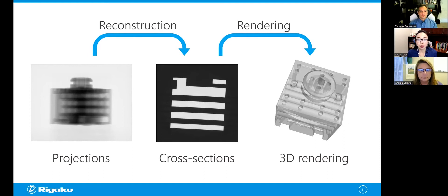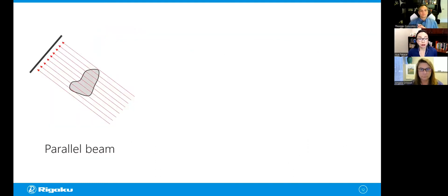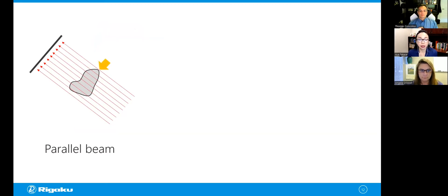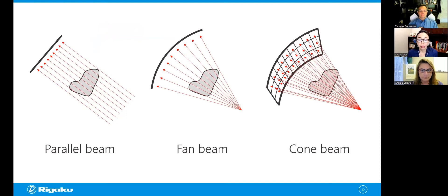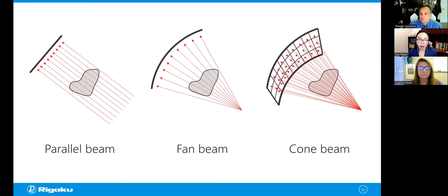Once you have a set of cross-sections or 3D volume data, you can display it in a 3D rendered view, but this is just a visual representation. Rendering itself is not reconstruction. Reconstruction is a process of going from the projections to the cross-sections — from 2D to 3D. When you do the reconstruction calculation, it's important to understand what X-ray geometry you use for data collection. You might use parallel beam geometry, fan beam geometry, or cone beam geometry. As you go from parallel to cone beam, the calculation gets more complicated. We're going to focus on parallel beam geometry today.